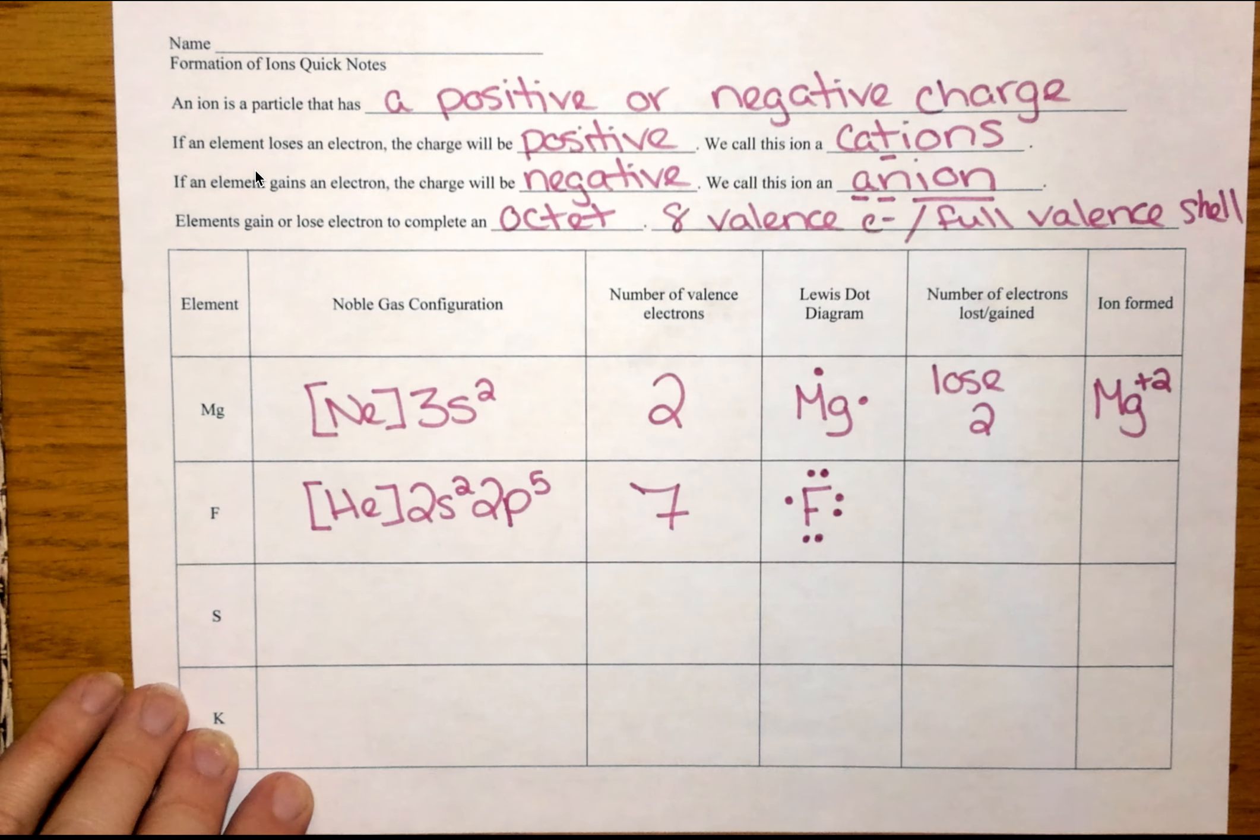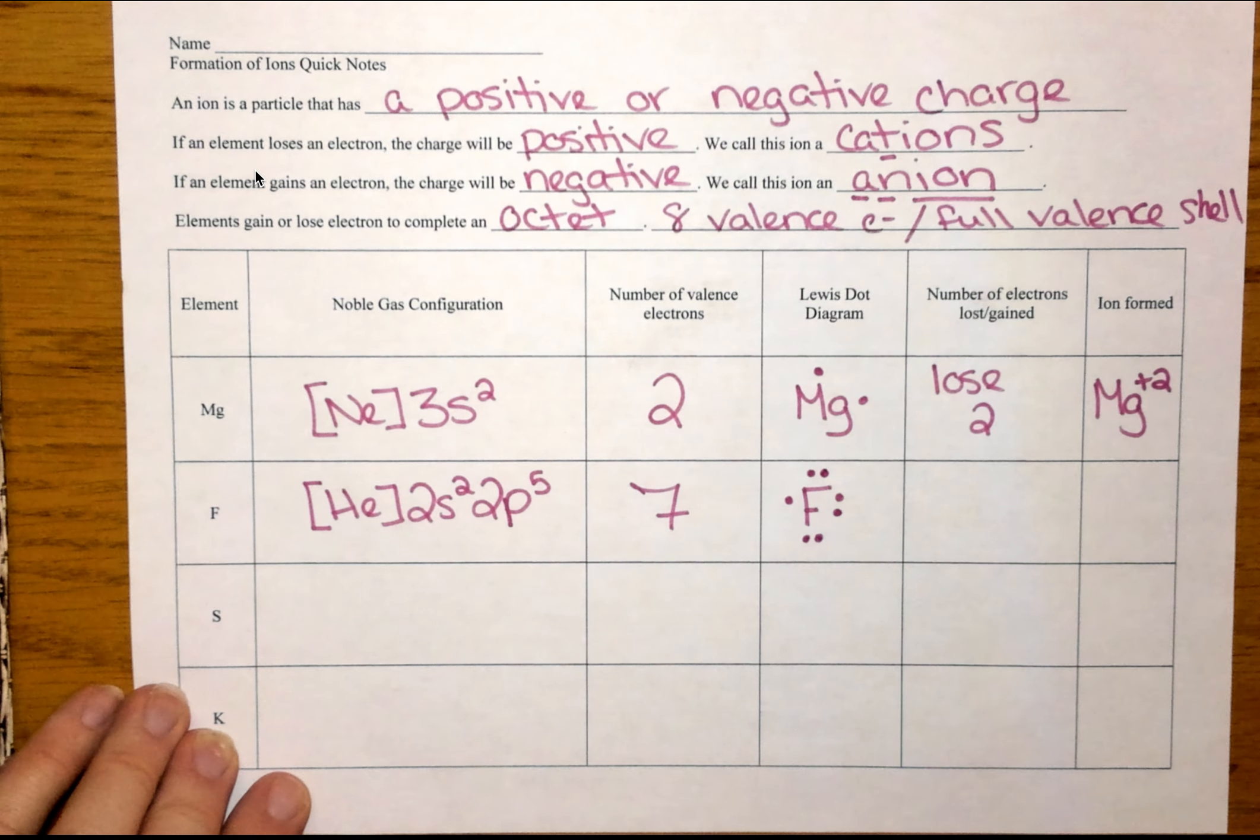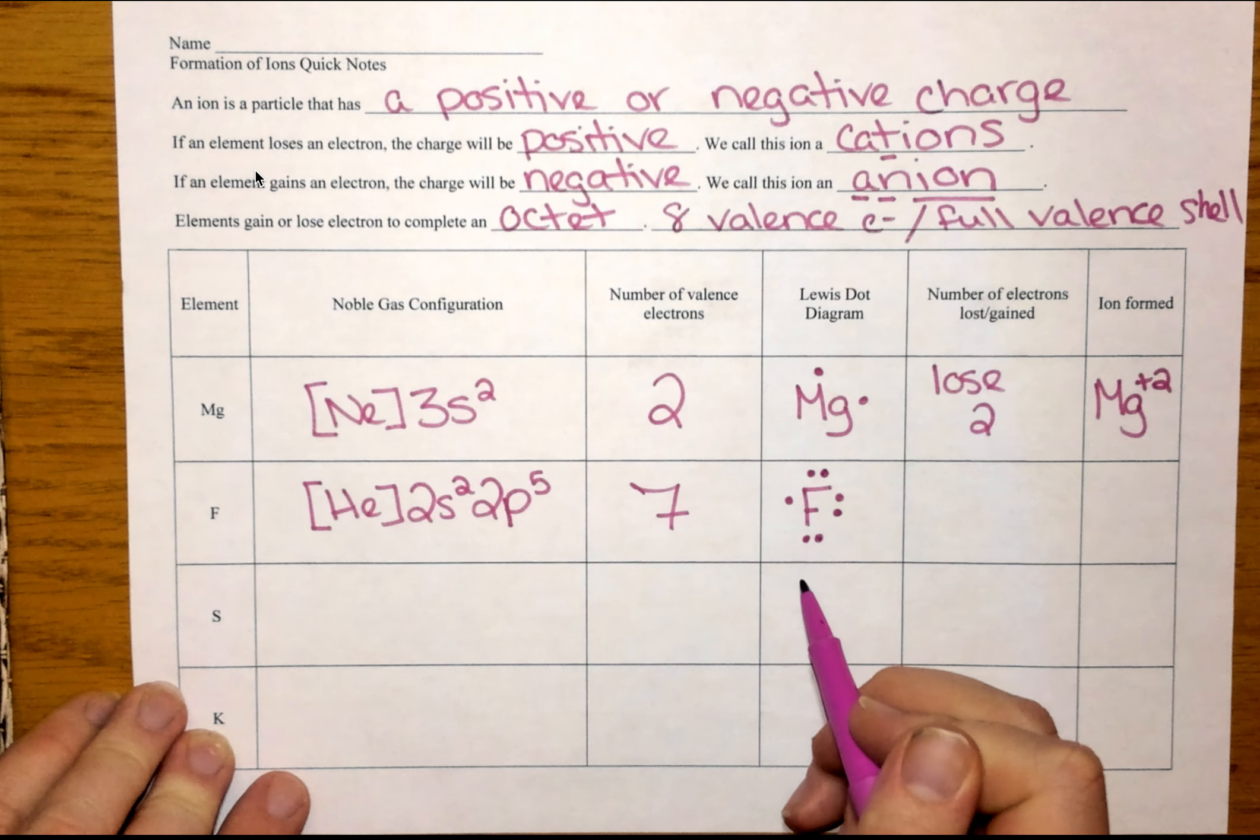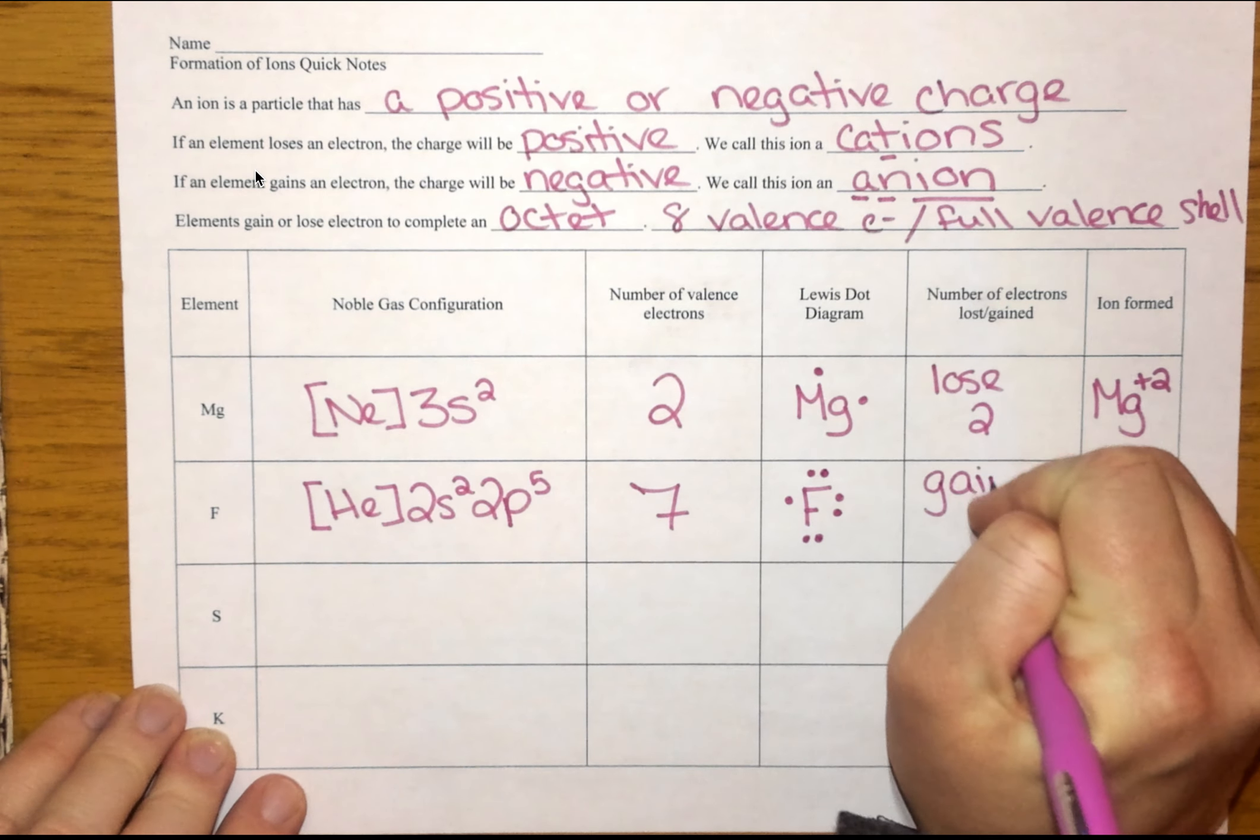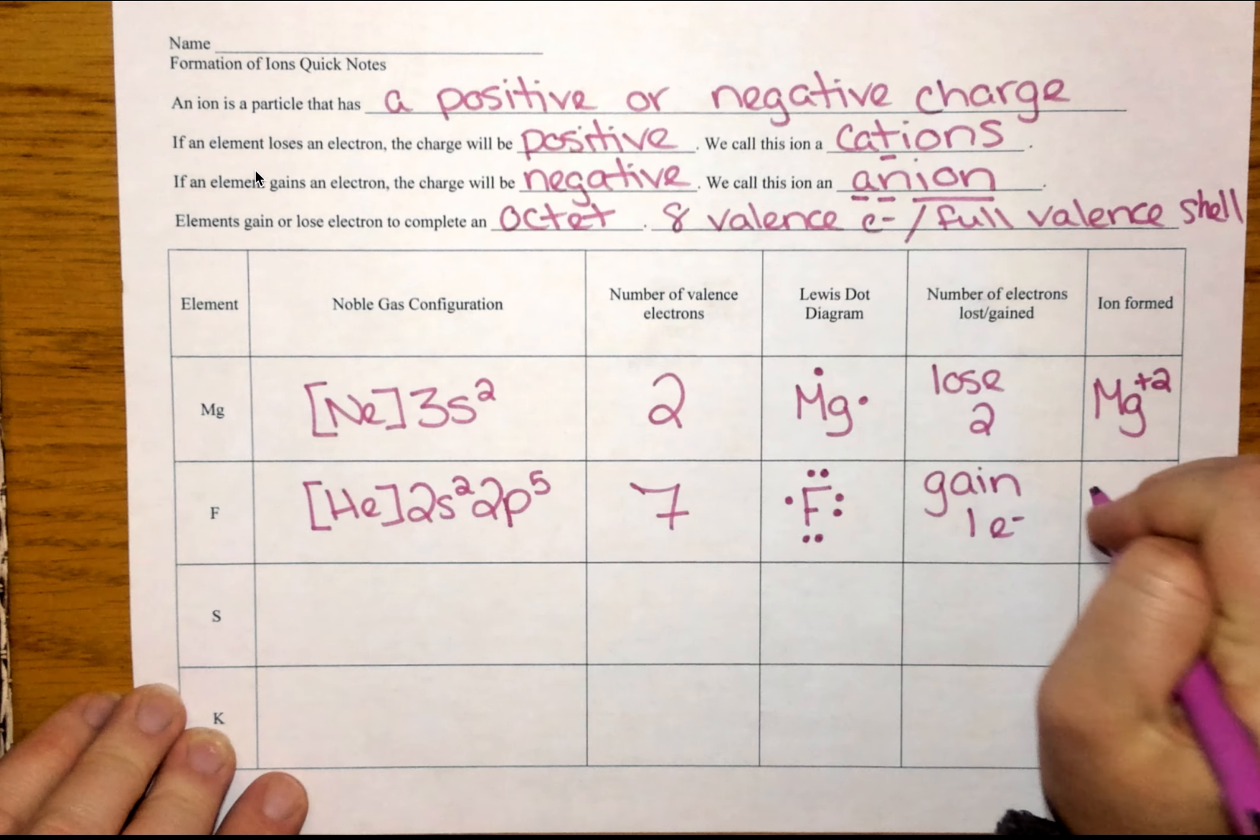So now, when I'm looking at this diagram, would I want to gain one to fill my octet? Or would I want to lose all seven? Well, gaining one is going to take less energy than losing seven. And we already know that fluorine has the highest electronegativity. It really wants electrons. So fluorine is going to gain one electron.